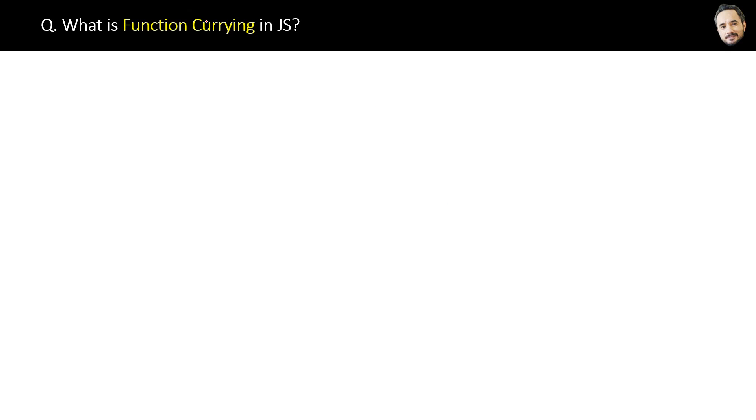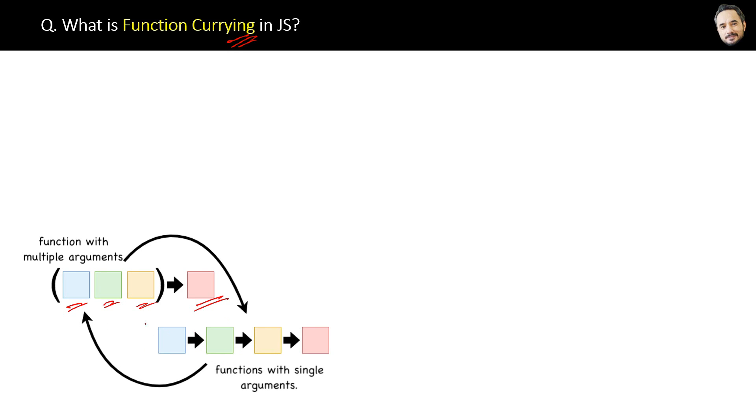What is function currying in JavaScript? Good question. Suppose you are calling a single normal function with multiple arguments and getting a single result as output. Now by using function currying you can break down that single function into multiple functions and pass single parameters separately for each function. That is what function currying is.